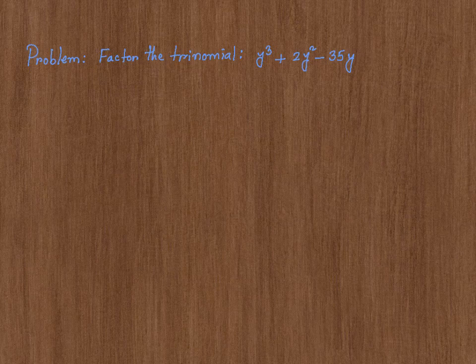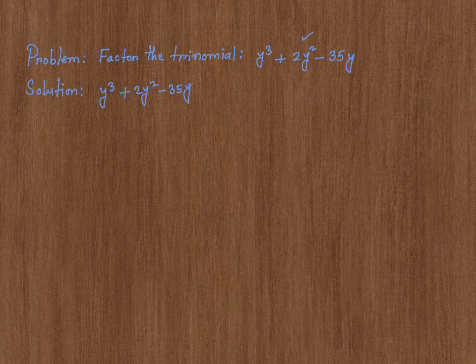In this video, I'm going to factor this trinomial: y cubed plus 2y squared minus 35y. Before I do the factoring, let's look at this given trinomial and see if there is anything that we could factor out from all three terms. As it turns out, there is.